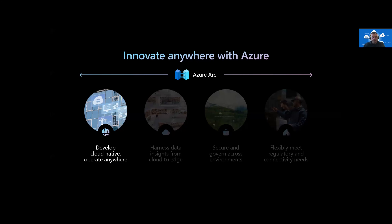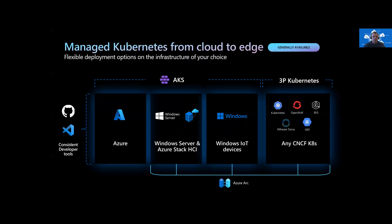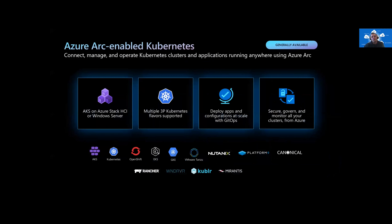First, innovate anywhere with Azure. AKS forms the foundation for building modern cloud-native apps anywhere you need them. We provide an end-to-end Microsoft solution with Azure Kubernetes Service (AKS) on Stack HCI and Windows Server, which is easy to deploy and keep up to date. You can ensure security, compliance, and observability for all of these clusters using integrated Azure services such as Microsoft Defender for Cloud, Microsoft Sentinel, Azure Policy, and Azure Monitor. Azure Arc enabled Kubernetes also lets you connect existing Kubernetes clusters to Azure Arc for single-pane-of-glass management across all clusters.